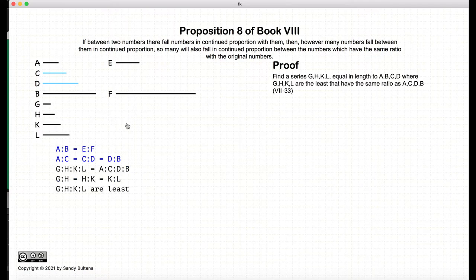So using the propositions or the methods described in Proposition 33 of Book 7, we're going to come up with a series of numbers, g, h, k, and l, that are the least numbers that are proportional.